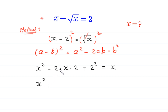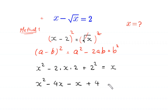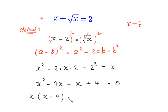x squared minus 2 times x times 2 becomes negative 4x. If we move this x to the left hand side, this will become negative x, and 2 squared becomes 4, giving us x squared minus 4x minus x plus 4 is equal to 0.